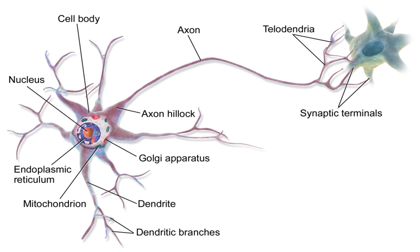The number of neurons in the brain varies dramatically from species to species. In a human, there are an estimated 10–20 billion neurons in the cerebral cortex and 55–70 billion neurons in the cerebellum. By contrast, the nematode worm Caenorhabditis elegans has just 302 neurons, making it an ideal model organism as scientists have been able to map all of its neurons. The fruit fly Drosophila melanogaster has around 100,000 neurons and exhibits many complex behaviors. Many properties of neurons, from the type of neurotransmitters used to ion channel composition, are maintained across species, allowing scientists to study processes in much simpler experimental systems.